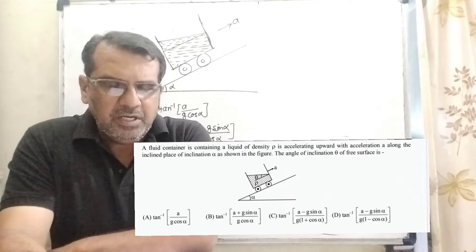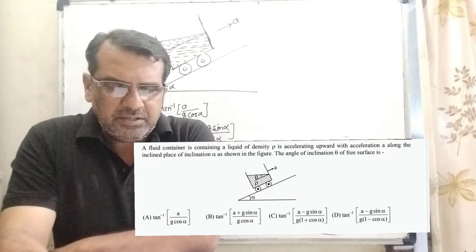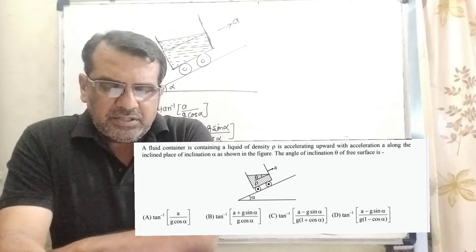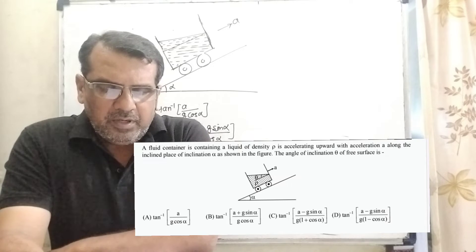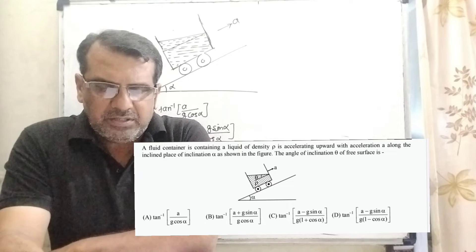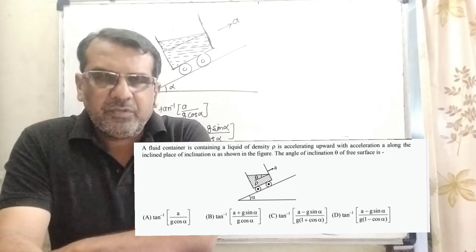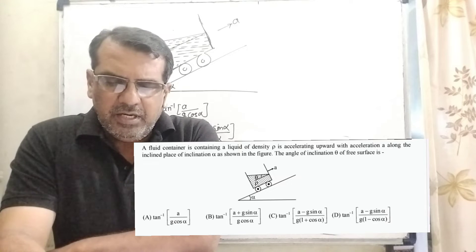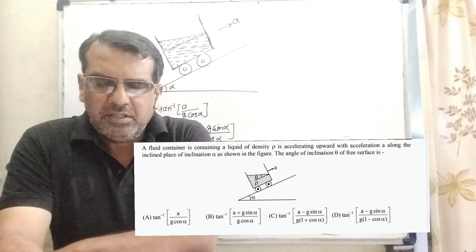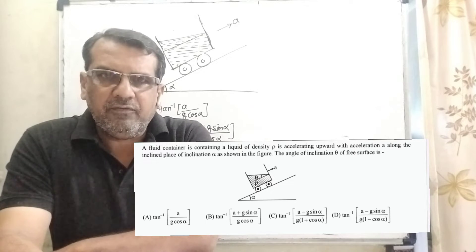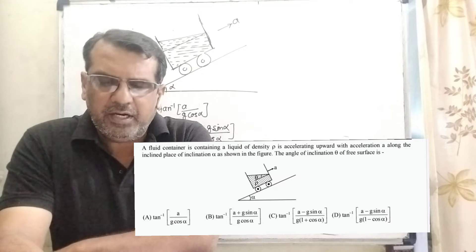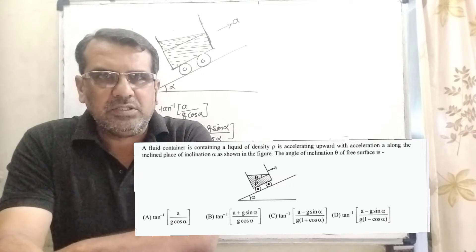Option C: tan inverse of (a minus g sin alpha) upon g times (1 plus cos alpha). Option D: tan inverse of (a minus g tan alpha) upon g times (1 minus cos alpha).